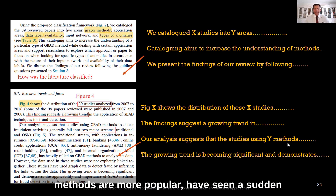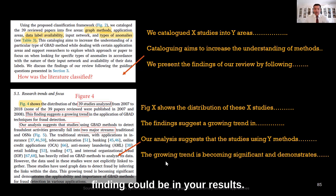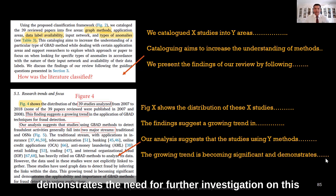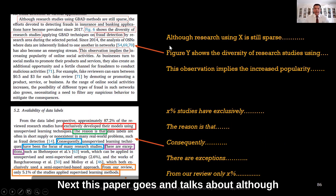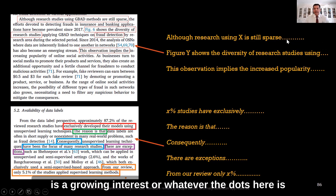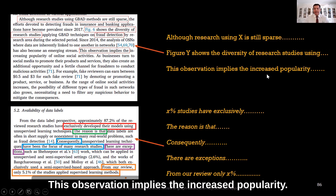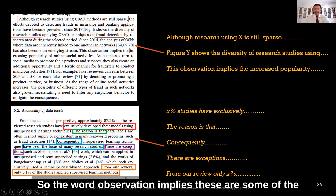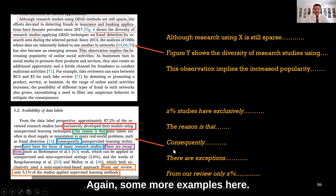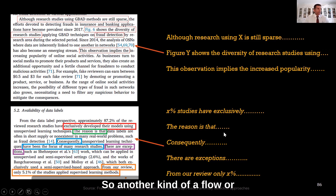'Our analysis suggests that studies using Y methods are more popular and have seen a rise in interest among researchers.' The growing trend is becoming significant and demonstrates the need for further investigation or more funding. 'Although research using X topic is still sparse, there is a growing interest.' For figures, you can write: 'Figure Y shows the diversity of research study — this observation implies increased popularity.' Keywords like 'observation implies' are useful for the results section. Another example: 'X percent of studies have exclusively investigated something; however, from our review, only X percent of papers...' — this is another logical flow for writing results.